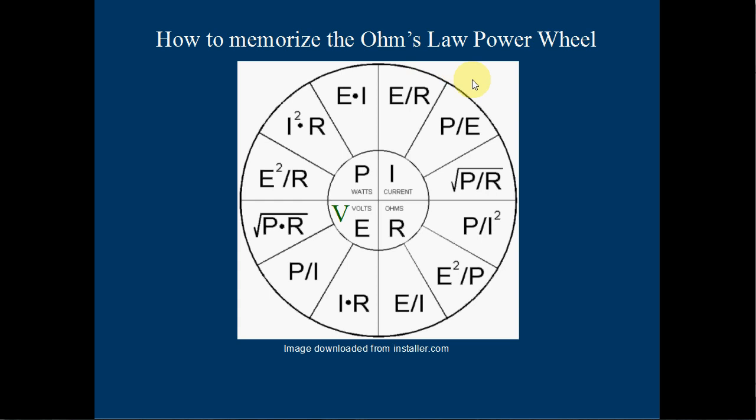What we have is 12 different formulas that consist of four different elements. These variables within our electrical power: P for watts or power, I for current or amps, R for ohms or resistance, and then we have our voltage, which is expressed as E for electromotive force or V for voltage. I like to use V.